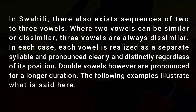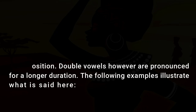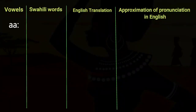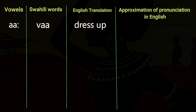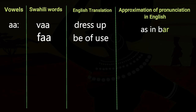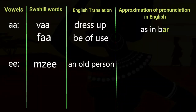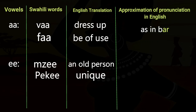The following examples illustrate this. For double vowels — AA: 'vaa' meaning Dress up, 'faa' meaning Be of use — as in 'baa'. Another sequence is EE: 'mzee' meaning An old person, 'peke' meaning Unique — as in 'exit'.